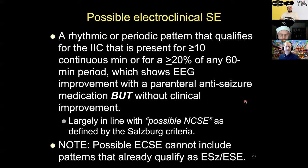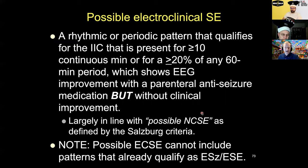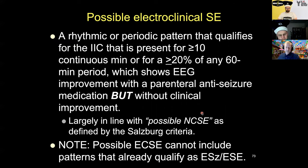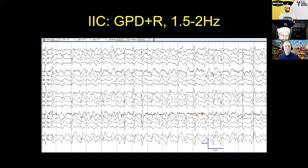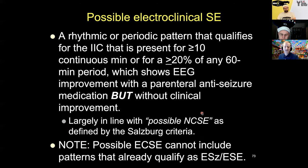If you have a pattern on the IIC and you give IV anti-seizure medication and the EEG improves but the patient does not, you really haven't learned anything — we call that possible electroclinical status, also known as possible non-convulsive status. Going back to the last example: if we gave a drug and saw EEG improvement but no clinical improvement, we call it possible electroclinical status. It's pretty much the same thing you were going to call it before you did your trial — it's still saying it's on the IIC. You don't know if it's causing any clinical correlate or not.